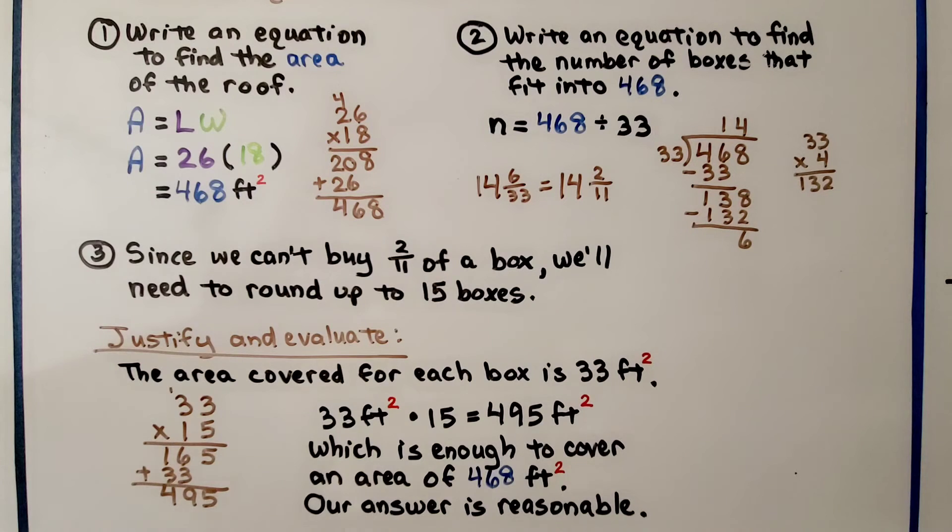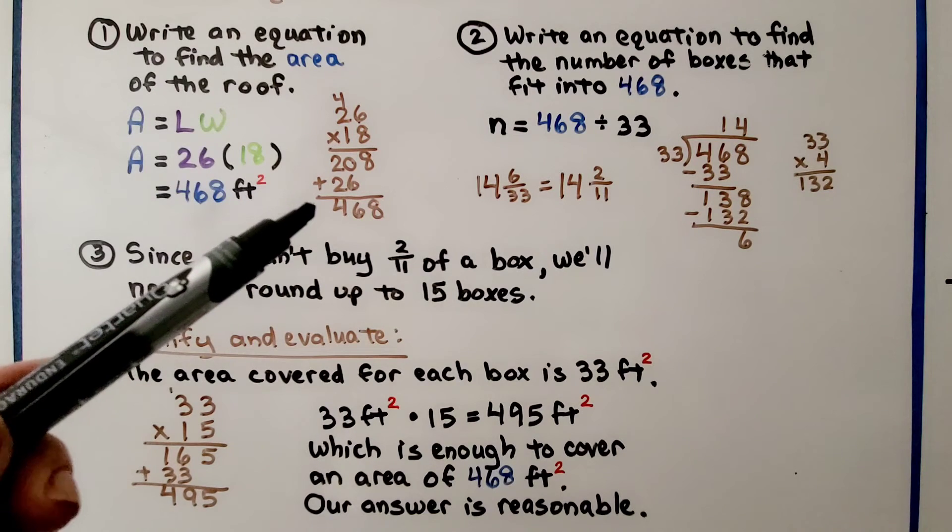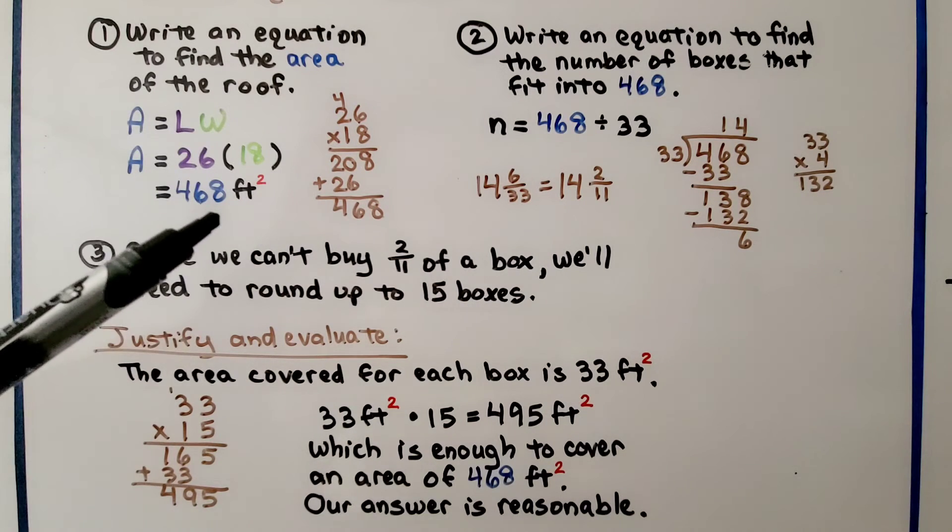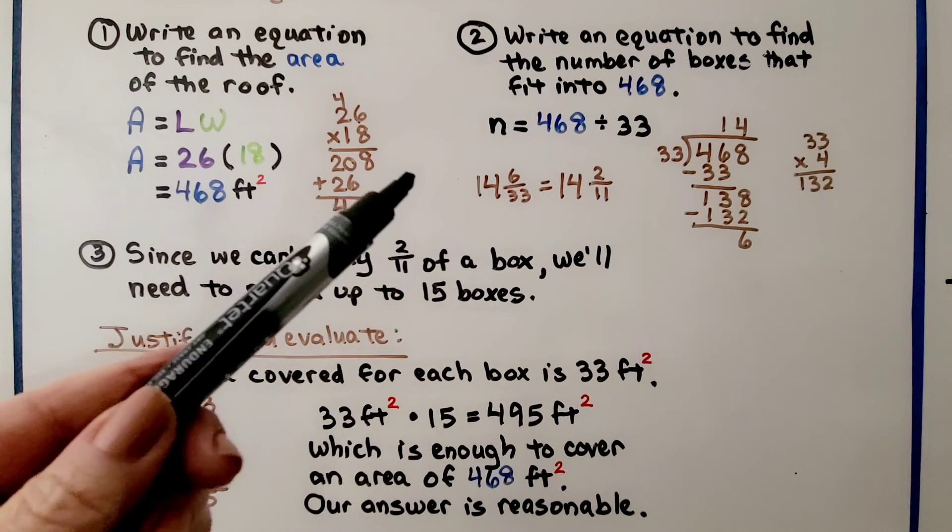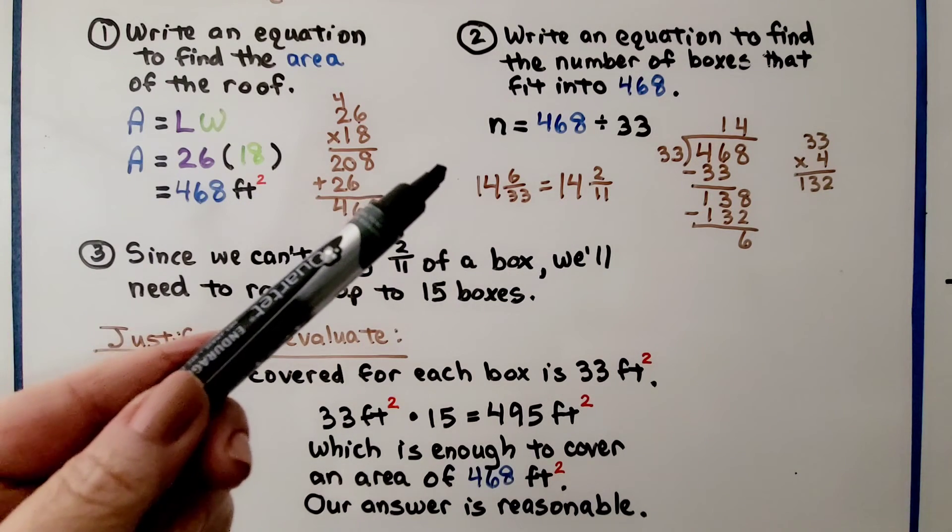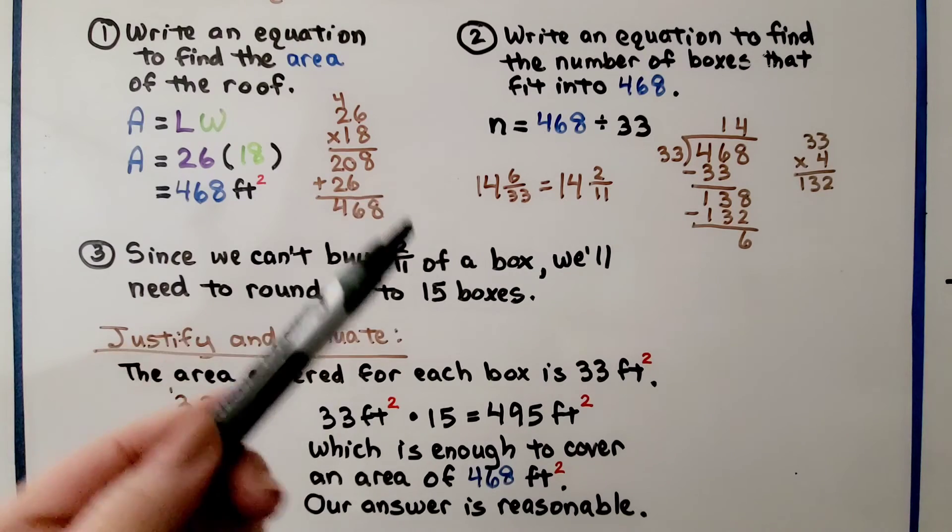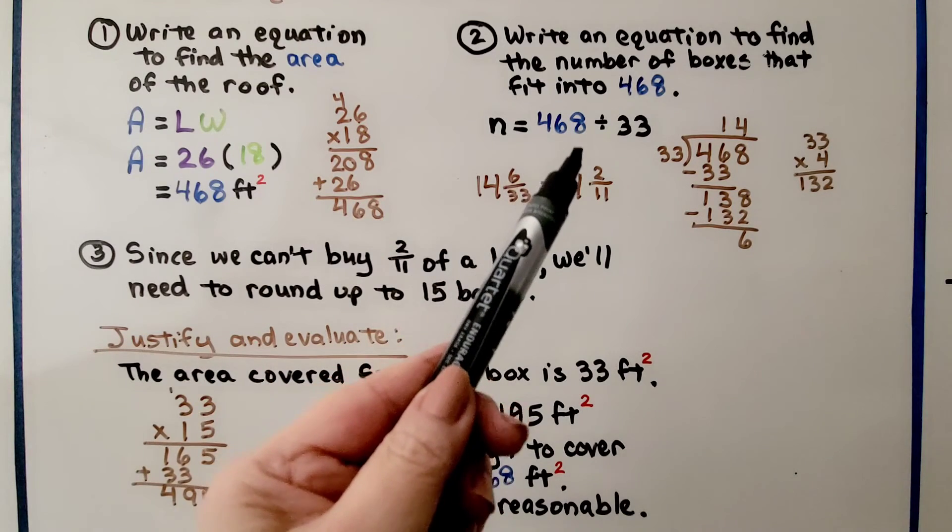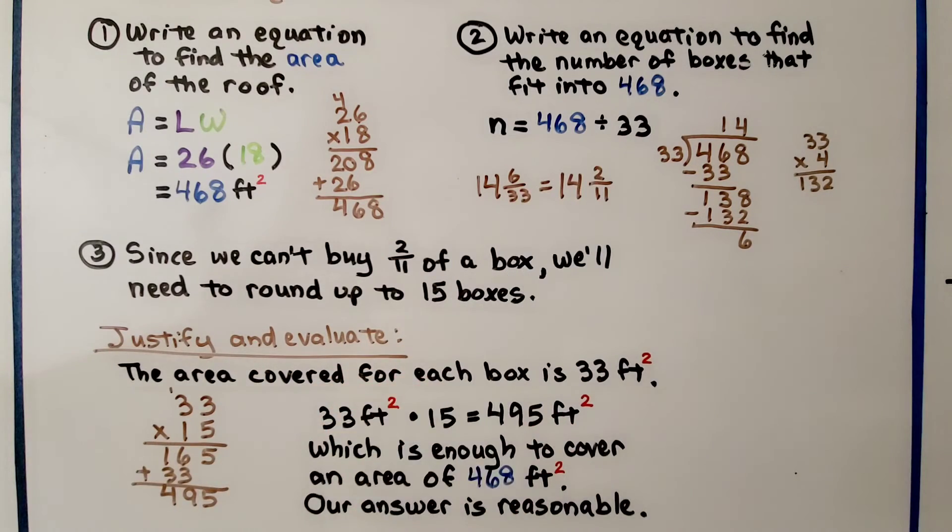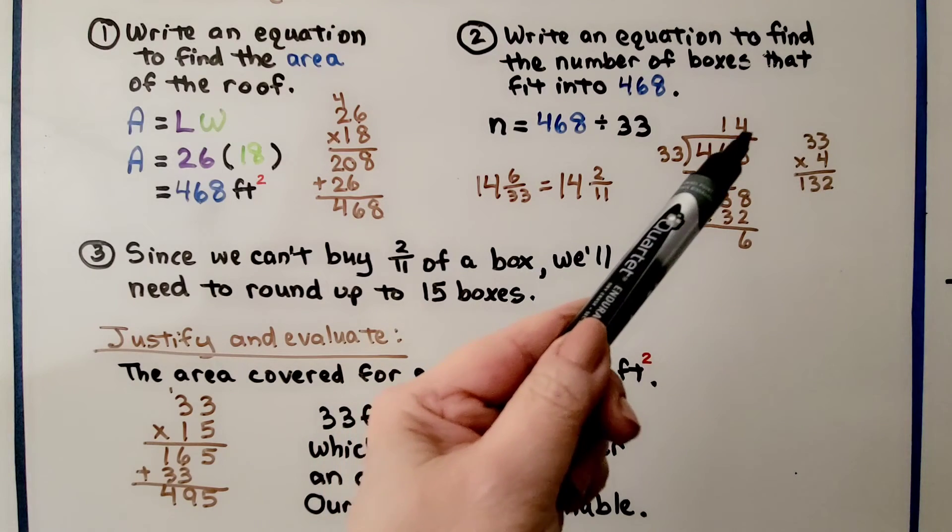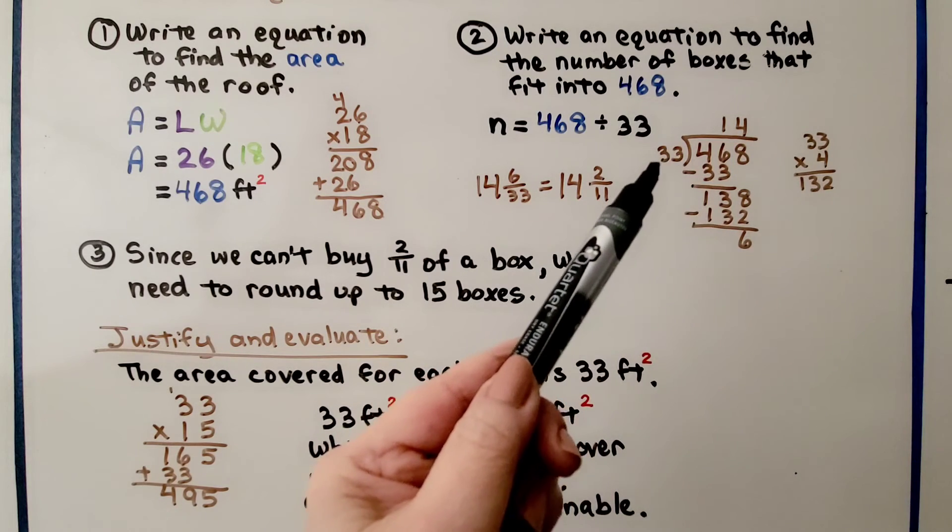The first step is to write an equation to find the area of the roof. It had a base of 26 and a height of 18. We multiply 26 times 18 and we get 468. We know the roof is 468 square feet. Now we write an equation to find the number of boxes that will fit into 468.